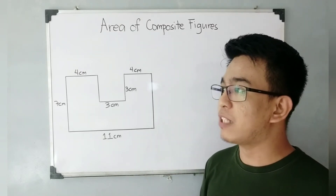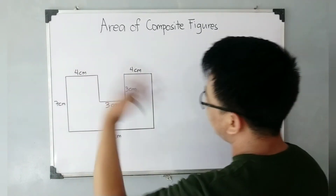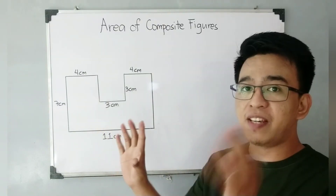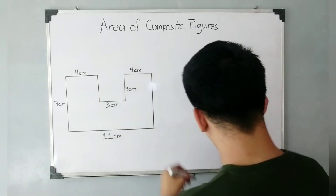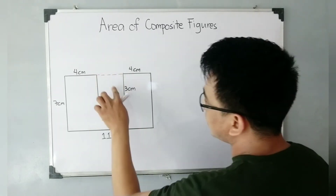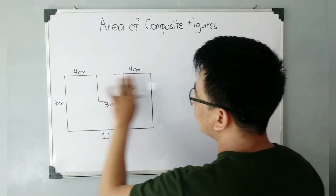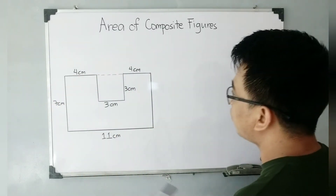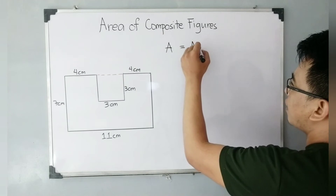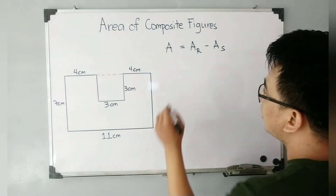This one is quite different because in the first example we added two areas of different rectangles. Here, the approach I will use is to subtract an area from a bigger area. I'll draw an imaginary line — as you can see, this one is a missing square. To create a bigger rectangle, the formula I will use is: area equals the area of the rectangle minus the area of the square.